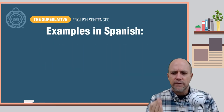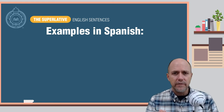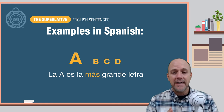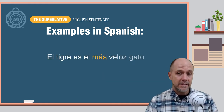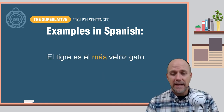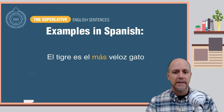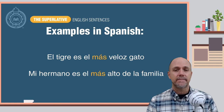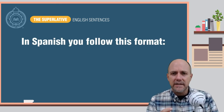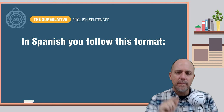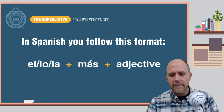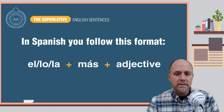In Spanish, the following are a few examples of the superlative: 'La A es la más grande letra.' 'El tigre es el más veloz gato.' 'Mi hermano es el más alto de la familia.' As you can see, in Spanish you follow this format: el, lo, or la, plus más, plus the adjective.